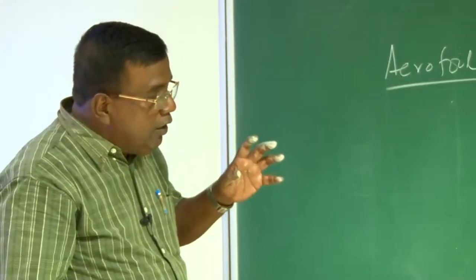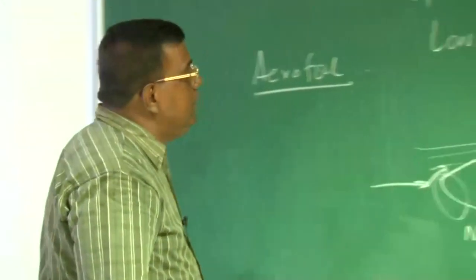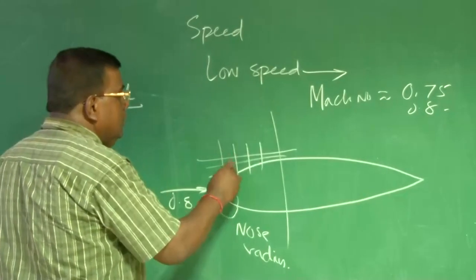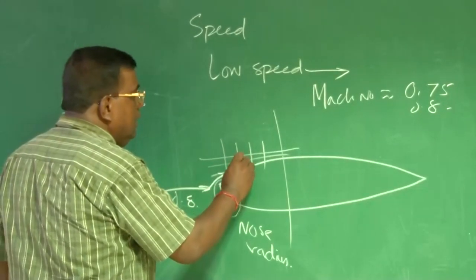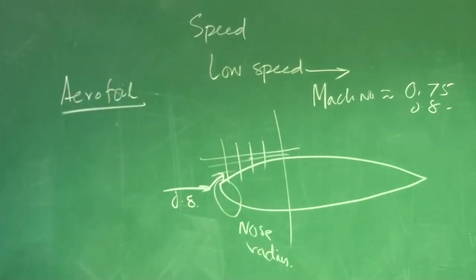So, when I talk about aerofoil, I need to know what should be the nose radius. Also, you see, if this is 0.8 Mach number, and across this, you know, by continuity, the speed will go on increasing. Right?